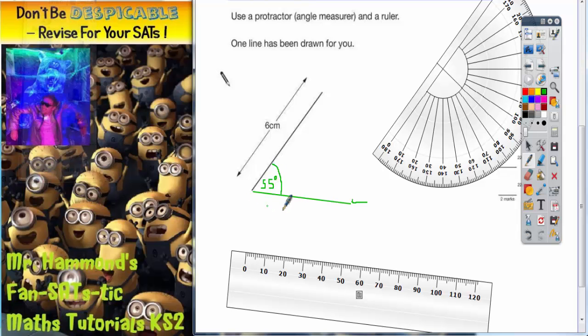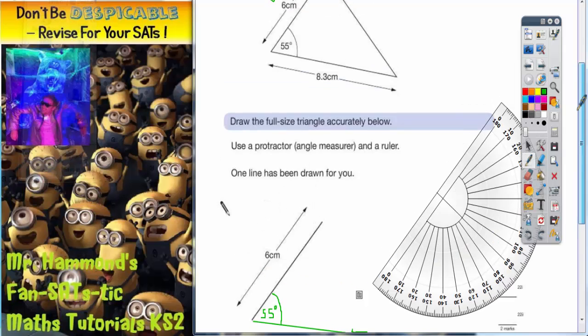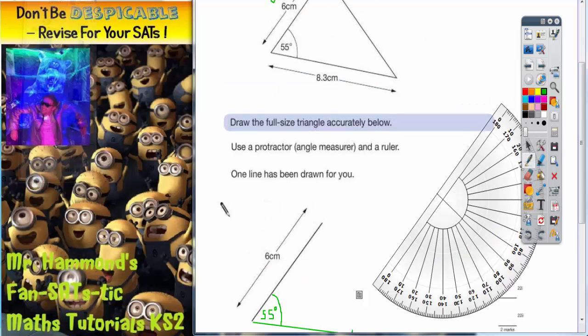But the question is, we don't know how long this line is at the moment, so what we've got to do now is get our ruler, and it does say to make it 8.3 centimeters long.